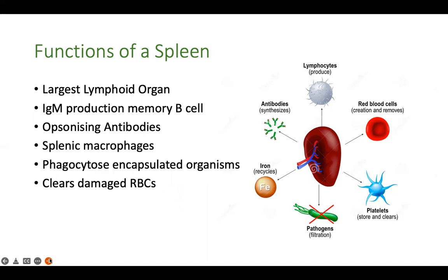It is also important to remember that the spleen is the site of clearance of damaged RBCs. For infections that are intracellular — for example, malaria — if a child without a spleen develops severe malaria, it can become severe because clearance of the damaged RBCs does not happen in the spleen.